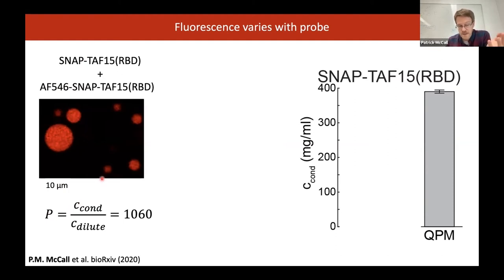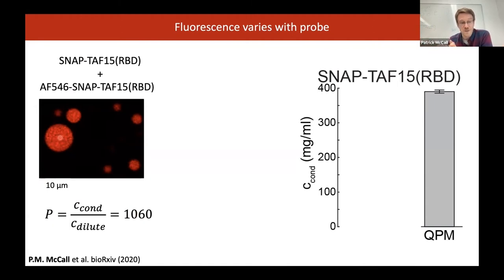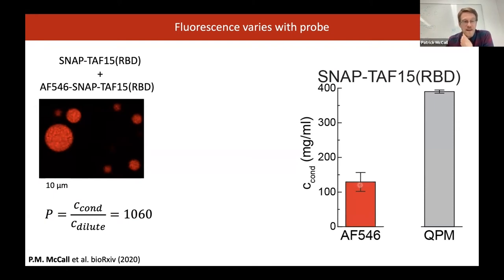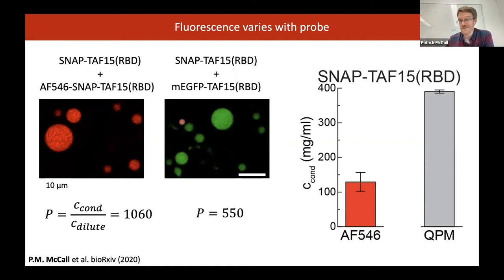Depending on how carefully you do this, you get different numbers. Trying to be quite careful with a point scanning confocal microscope and avoiding all pixels within a micron and a half of the edge to avoid pinhole crosstalk, you can get a partition coefficient of say 1000 — but still only about a third of what we find with quantitative phase microscopy. More problematically, we find that if we use a different fluorophore — GFP instead of an Alexa dye — we get a totally different number.